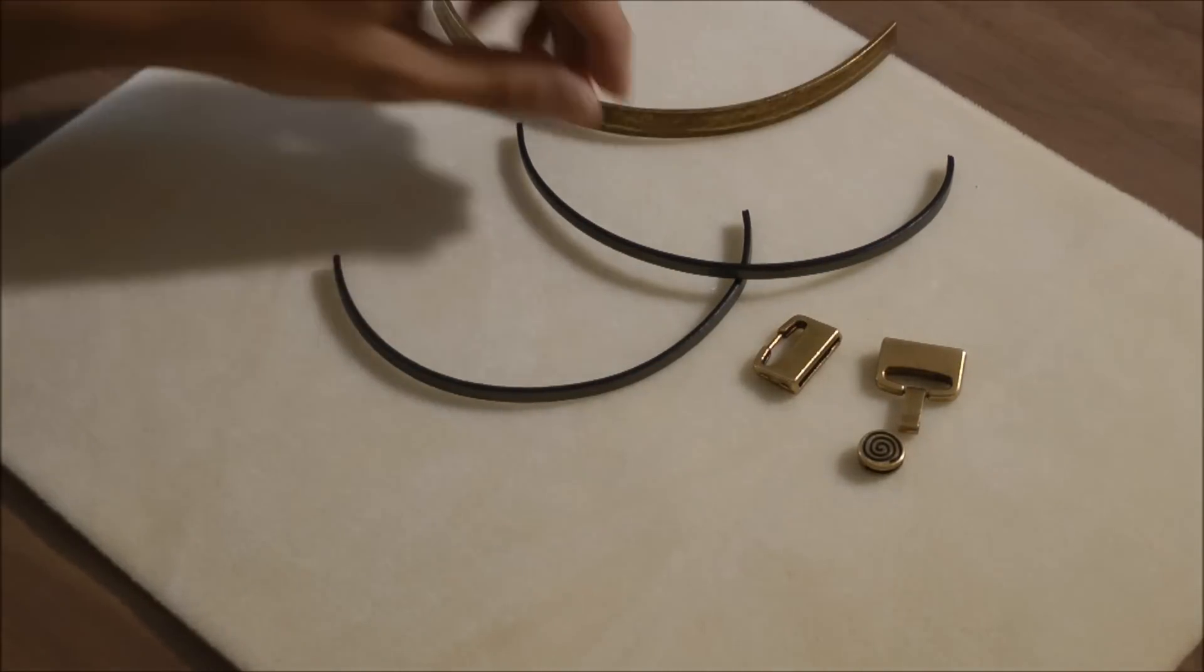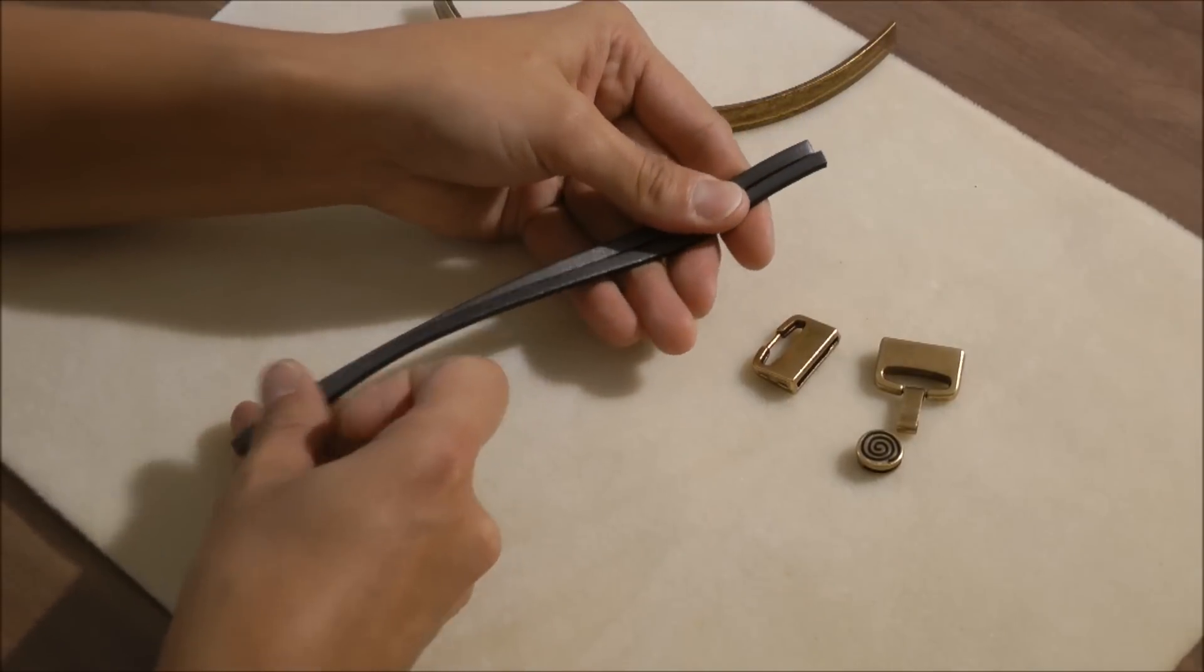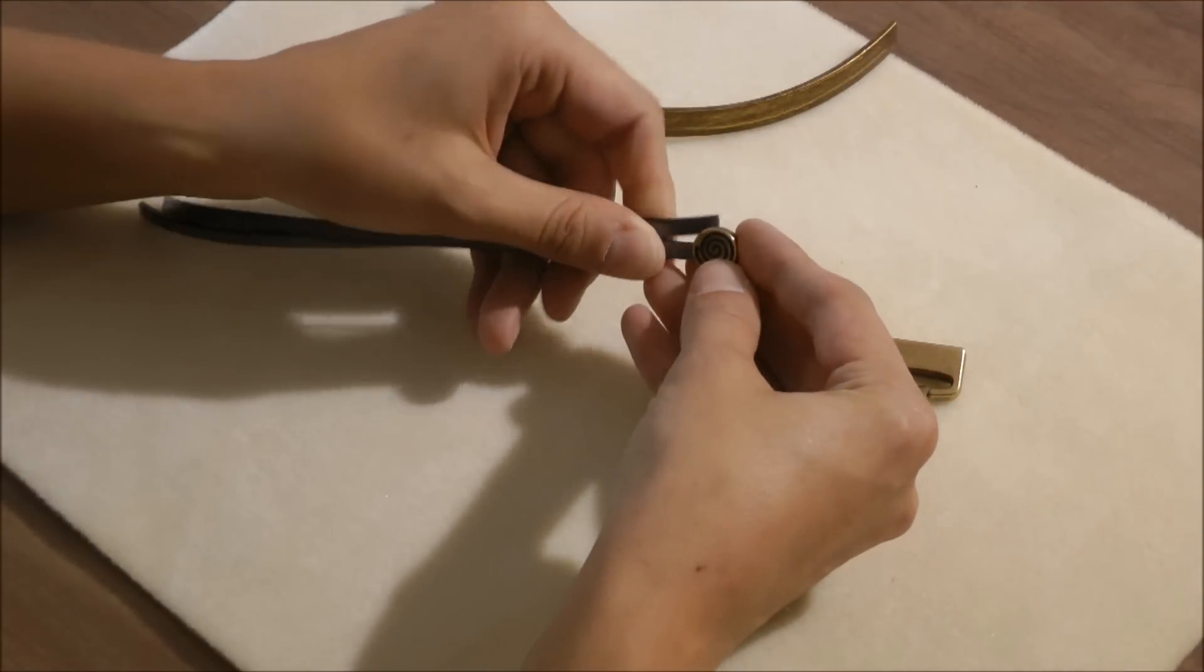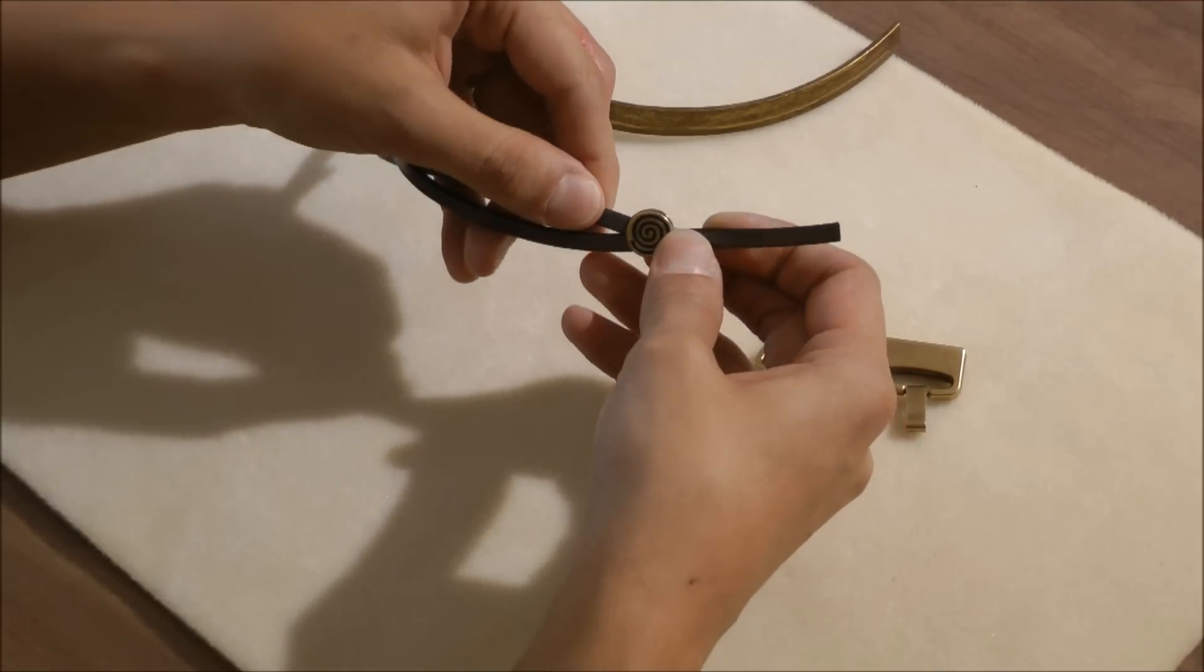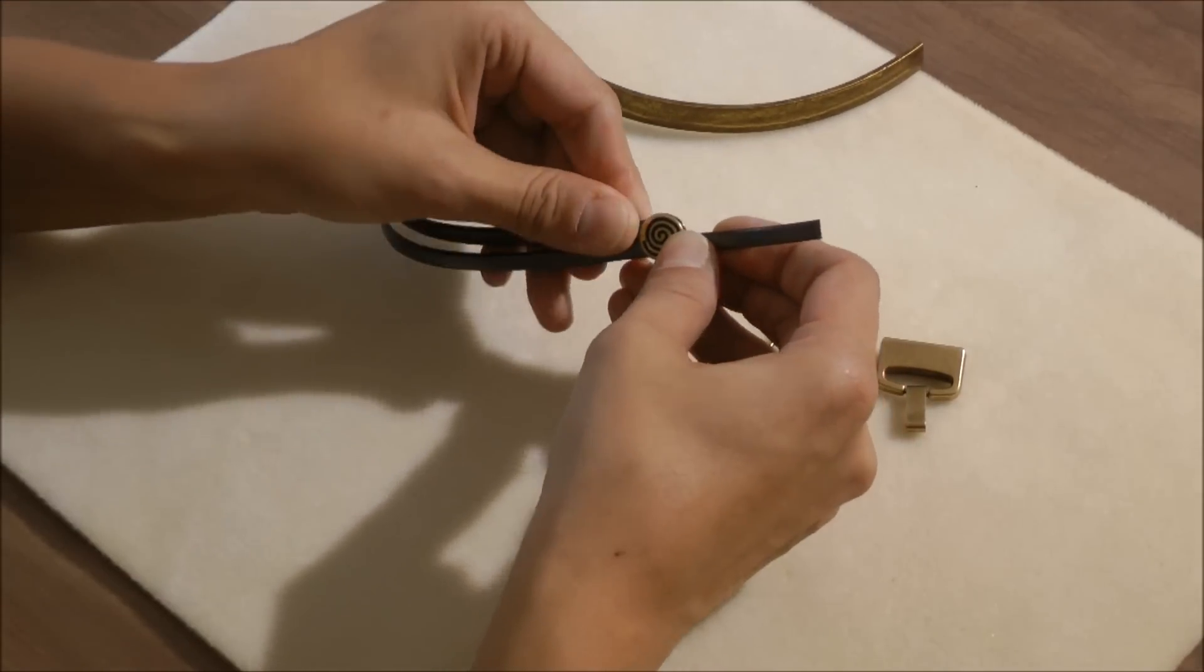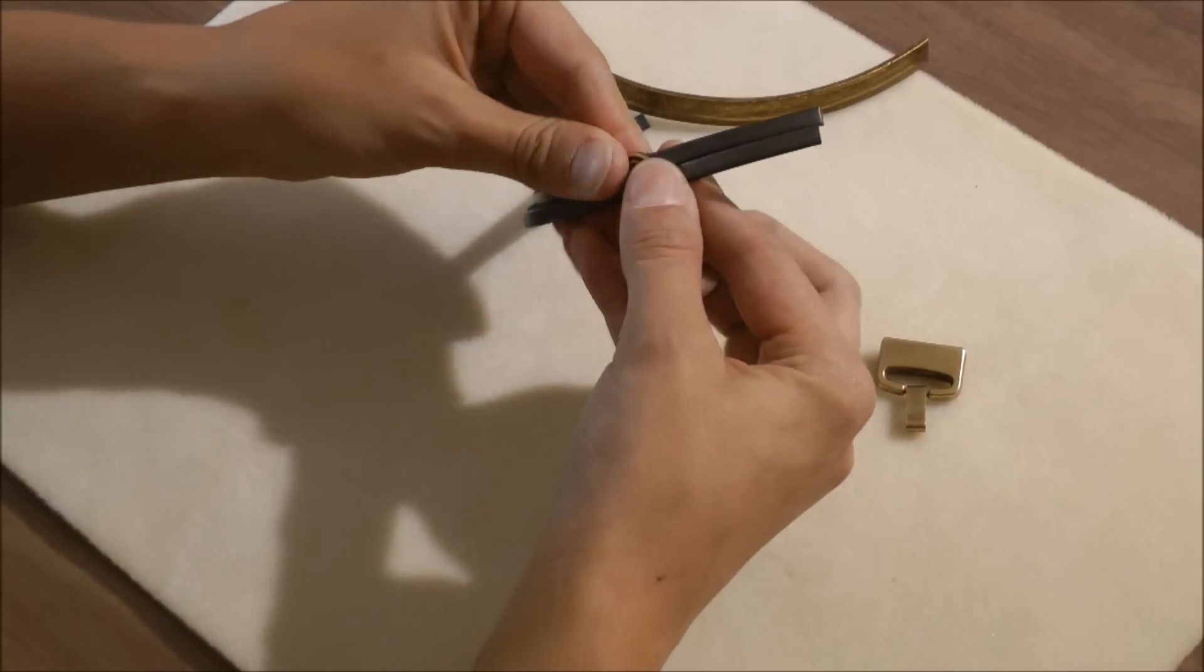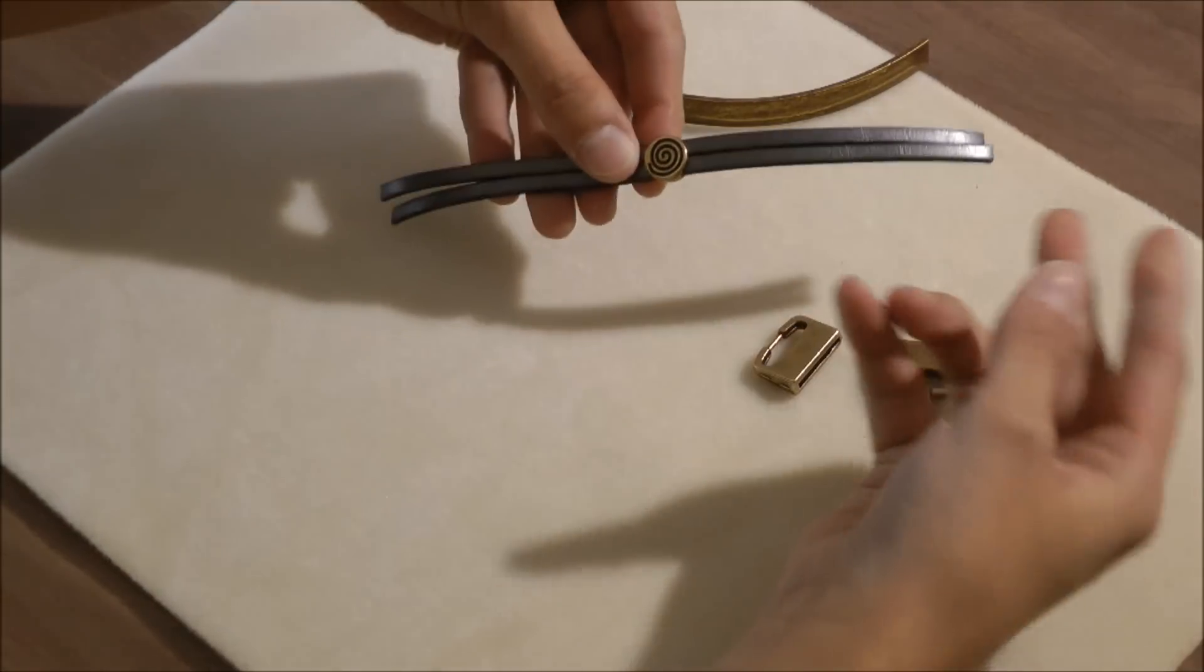So what you do is, to begin, I'm going to take both pieces of this leather and I'm going to feed them into this little spiral slider. I'm going to do one piece at a time to get them to fit in well. And then I'm going to slide this piece to the center of these two leathers.